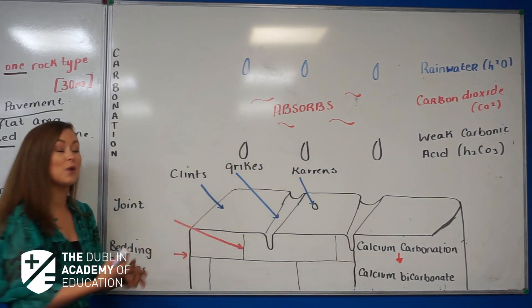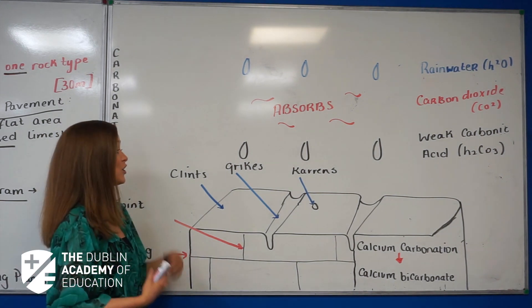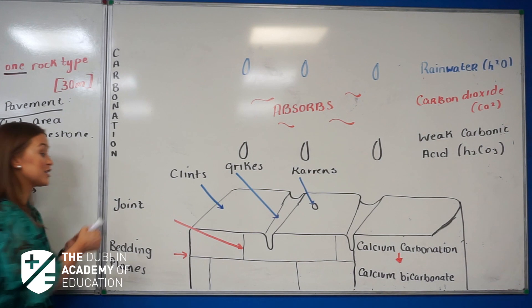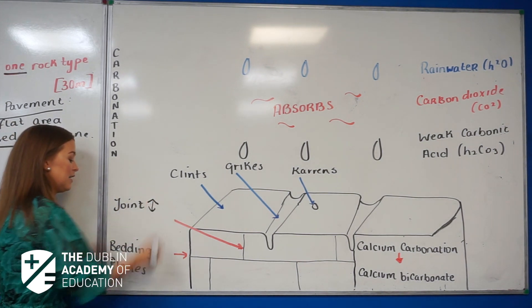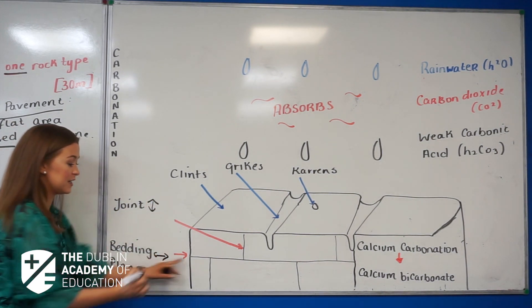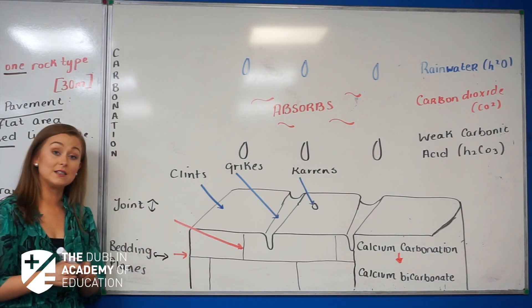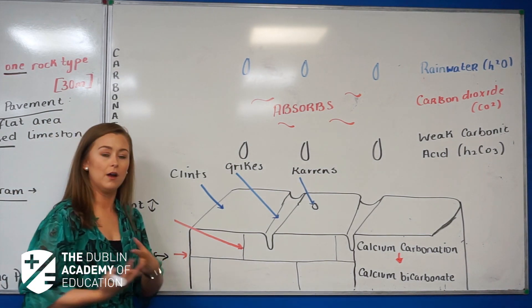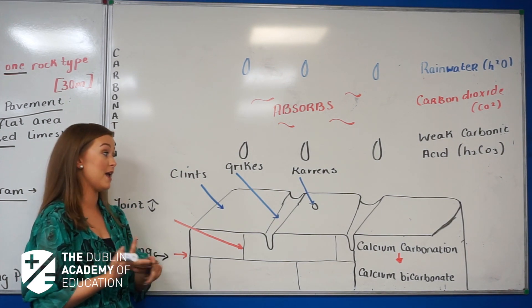Now when that occurs, what happens is the rock is weathered or broken down. Your vertical joints and your horizontal bedding planes, which you'll see here, are weakened—they're weakened and they're widened out—and what that produces on the limestone pavements is three main features.